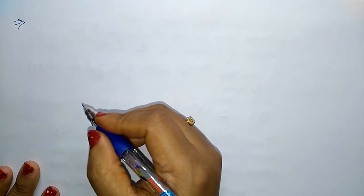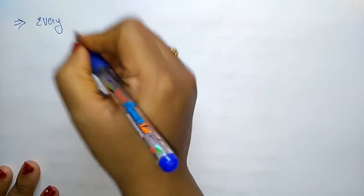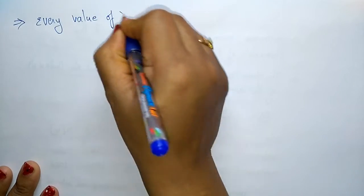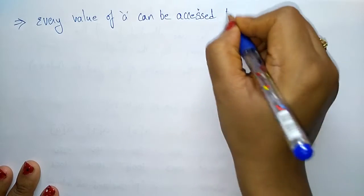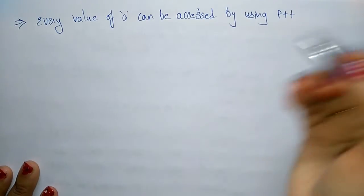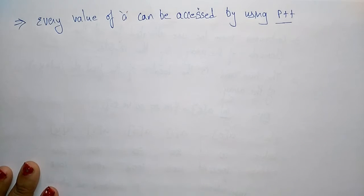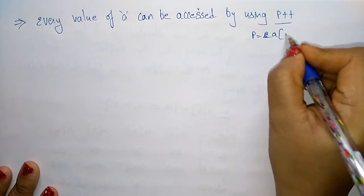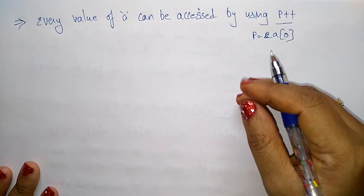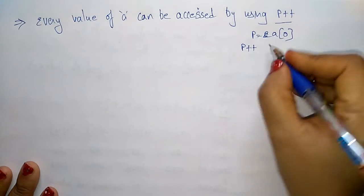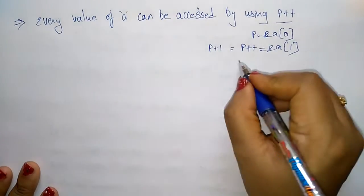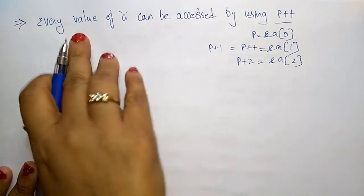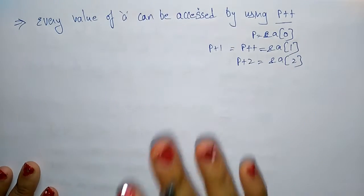Every value of A — that is A[0], A[1], A[2], and so on — can be accessed by using P++. To move from one element to another element, we have to increment the pointer. When P equals &A[0] and you increment with P++, it goes to &A[1], then P+2 gives &A[2], and so on. Every element of A can be accessed by using P++.